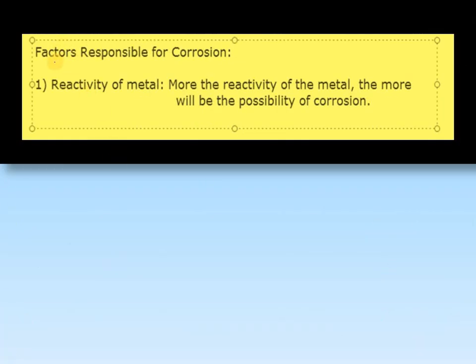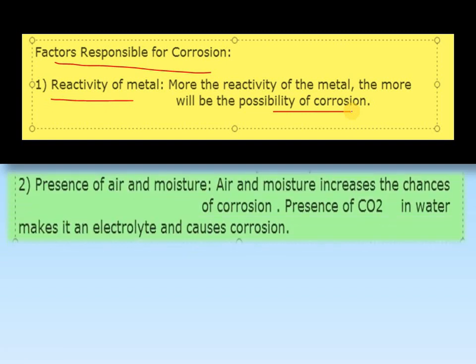Now, which factors are responsible for corrosion? The first factor is reactivity of metal. More the reactivity of the metal, more will be the possibility of corrosion. The second factor is presence of air and moisture. Air and moisture increase the chance of corrosion — the more moisture, the more corrosion will be.